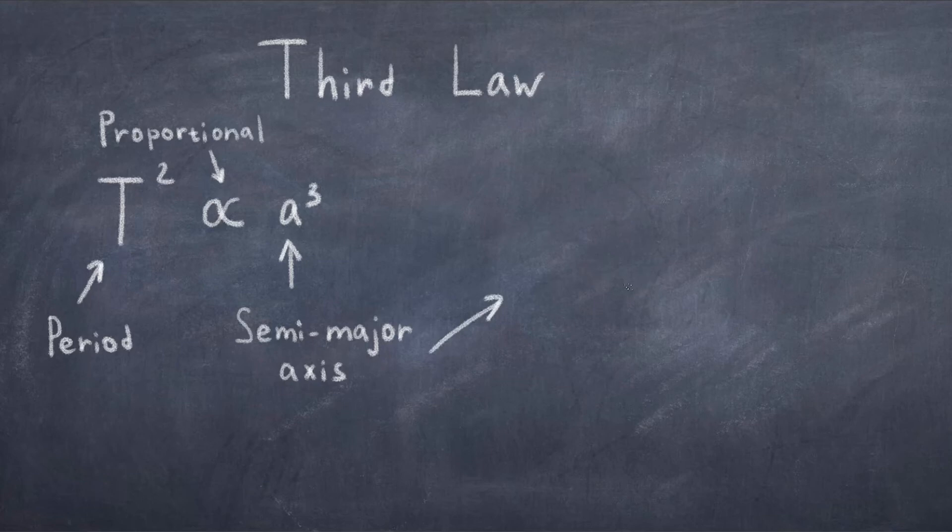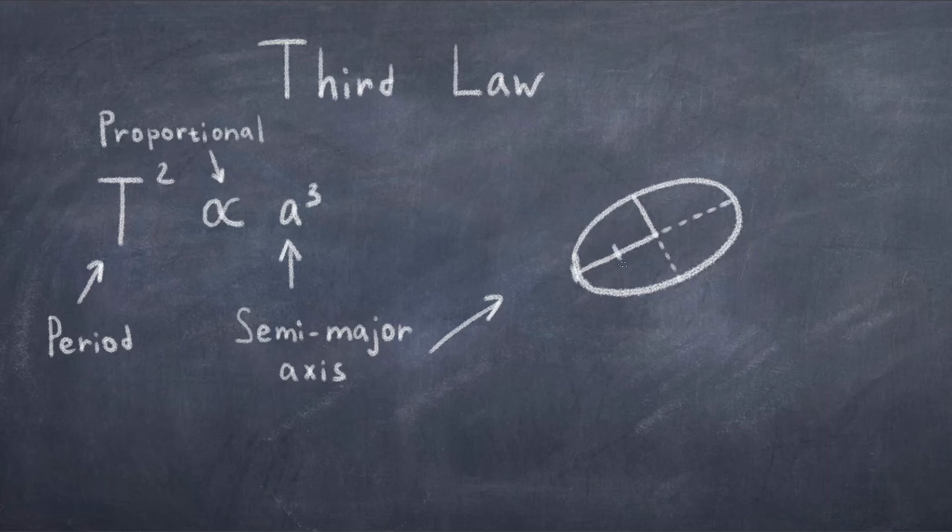We use the proportional sign since Kepler didn't manage to derive the exact equation. The semi-major axis, a, is just the longest possible distance from the center of the ellipse to the edge of the orbit.